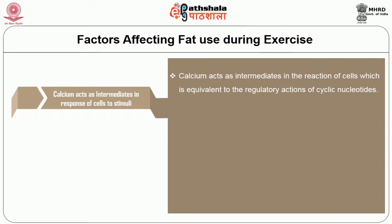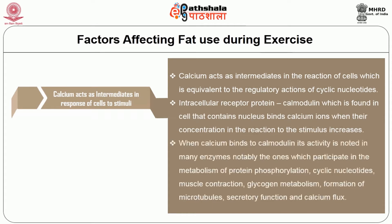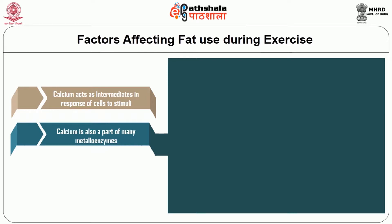Calcium acts as an intermediate in the reaction of cells, equivalent to the regulatory actions of cyclic nucleotides. Intracellular receptor proteins — calmodulin — found in cells containing a nucleus bind calcium ions when their concentration increases in reaction to a stimulus. When calcium binds to calmodulin, its activity is noted in many enzymes, notably those which participate in protein phosphorylation, cyclic nucleotide metabolism, muscle contraction, glycogen metabolism, formation of microtubules, secretory functions, and calcium flux.